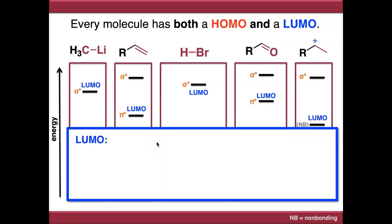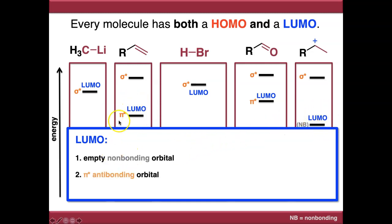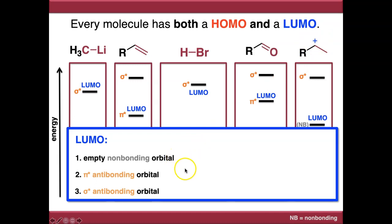Looking at LUMOs, again there are three possibilities: an empty non-bonding orbital — as with a carbocation — a pi star anti-bonding orbital, or a sigma star anti-bonding orbital. This is the order to look for them in. If your molecule has an empty non-bonding orbital like a carbocation, that's likely the LUMO. If not, look for a pi star anti-bonding orbital. If there's none of those, look for a sigma star anti-bonding orbital.